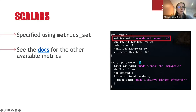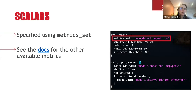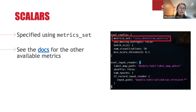We can always go to the docs to look for other available metrics. One thing to note is that some metrics are only relevant for object detection, whereas others are only relevant for image segmentation — so it's important to choose metrics relevant to your specific task. Most pipeline config examples from TensorFlow's object detection API already come with COCO detection metrics set up for you.